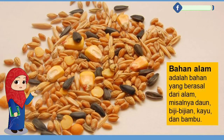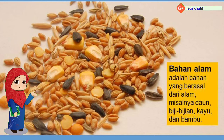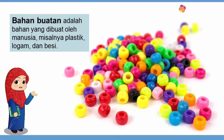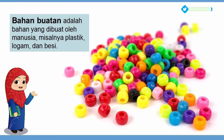Ini adalah contoh bahan dari alam. Bahan alam adalah bahan yang berasal dari alam, misalnya daun, biji-bijian, kayu, dan bambu. Sedangkan bahan buatan adalah bahan yang dibuat oleh manusia, misalnya plastik, logam, dan besi.